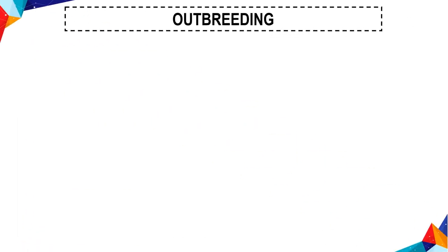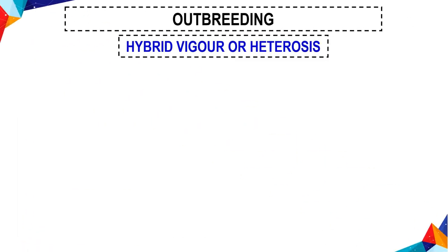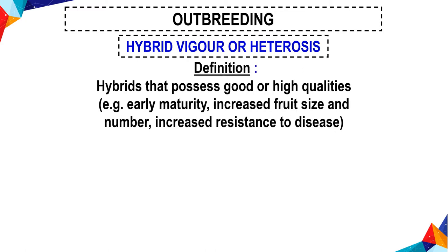Out-breeding produces hybrid vigor, also known as heterosis, which results in good or high quality offspring. Examples include healthy maturity, increased growth size and number, and increased resistance to disease.